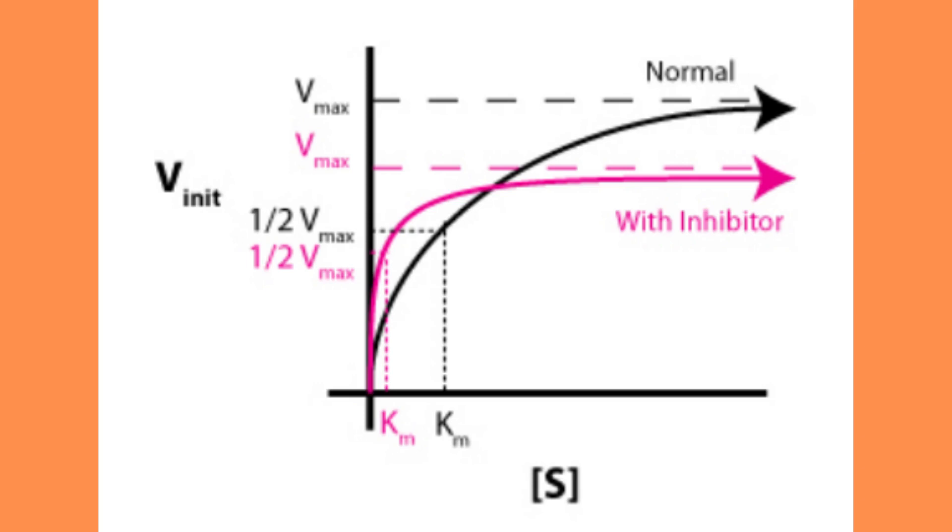However, if we add an uncompetitive inhibitor, the Michaelis-Menten plot starts looking like this instead. As you can see, both the value for Vmax as well as Km decreases.